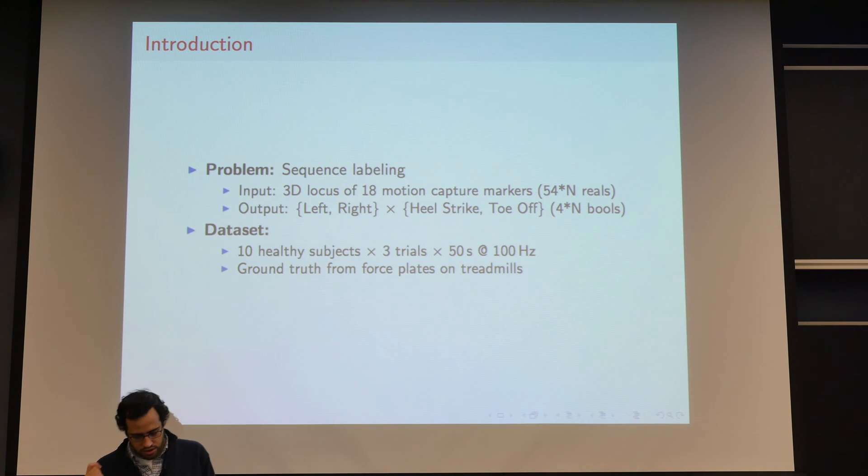In many cases, and this is true in our lab, when we walk over ground, we don't have a special hardware to detect the event. So we'd like to use the motion capture data to infer when these events are happening. So the problem could be set up as one of sequence labeling, where we have 3D information of a number of markers. In our case, 18 markers placed on the legs of a walking subject.